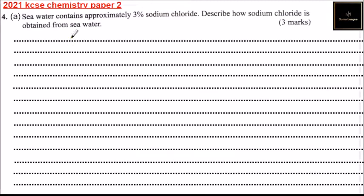Question number four, part A. Seawater contains approximately three percent sodium chloride. Describe how sodium chloride is obtained from seawater. We can have several ways.